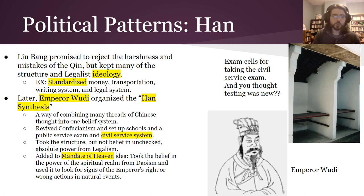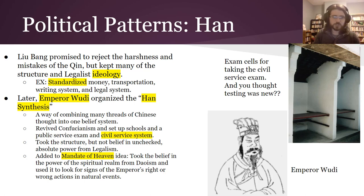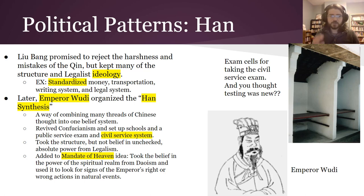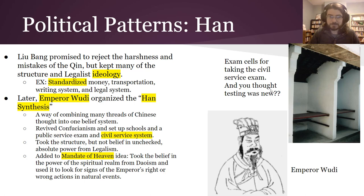The later Emperor Wu Di shifted things a bit. He organized the Han Synthesis — essentially taking Confucianism, Daoism, and other ancient Chinese beliefs and merging them together with the Mandate of Heaven and elements of legalism. It was brilliant. They also created a whole civil service system so there was some social mobility — you could get up in the world just by taking a test that would allow you to become a public servant. If you thought testing was new, you're wrong.